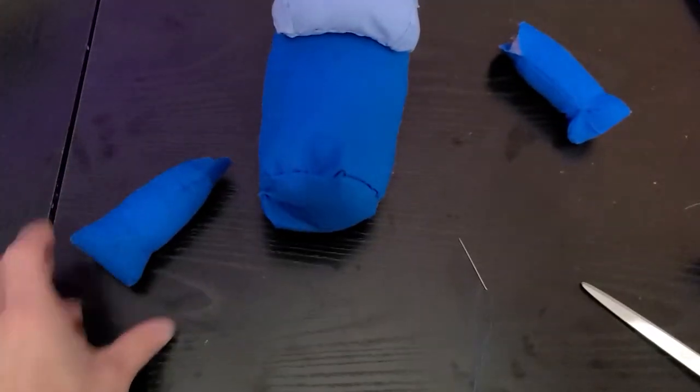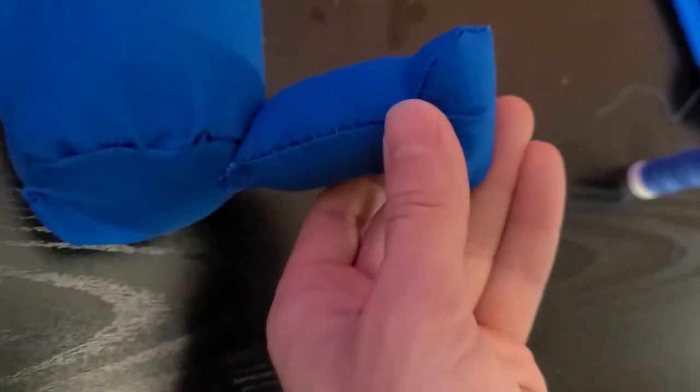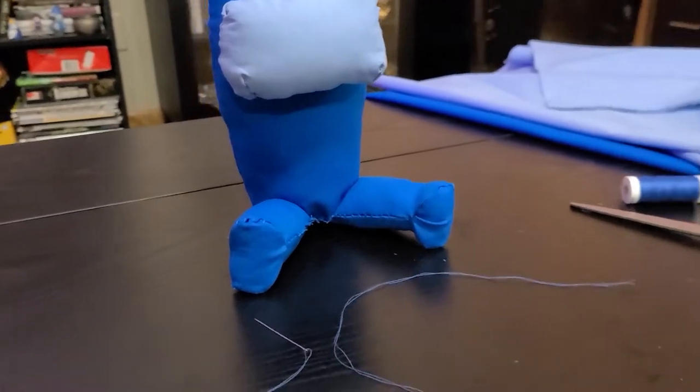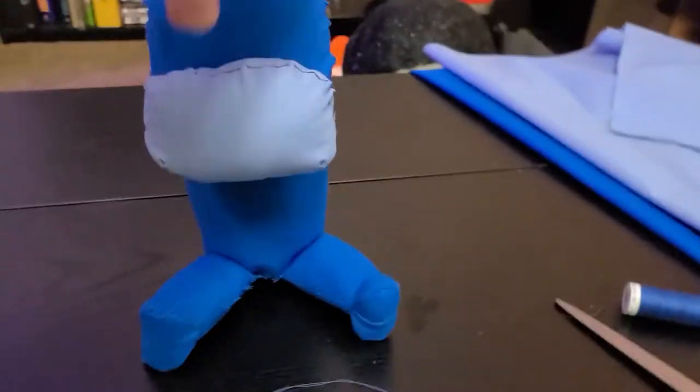And then I moved on to attaching the legs. I folded the one end part in so that I could just sew the other half to the bottom. Got a little floppy leg. Easy to sit down vibe going on. He sits upright by himself perfectly there.